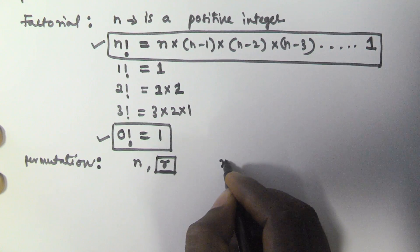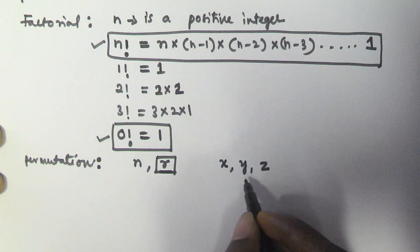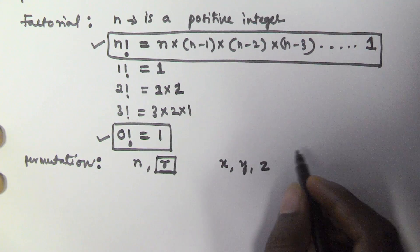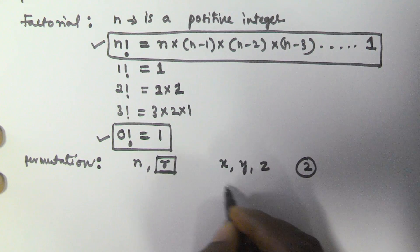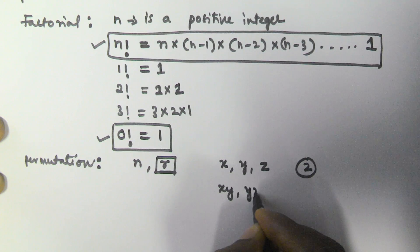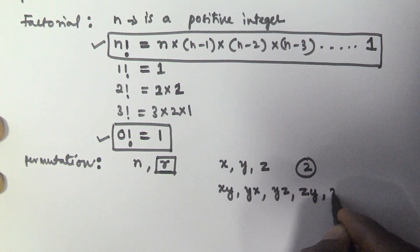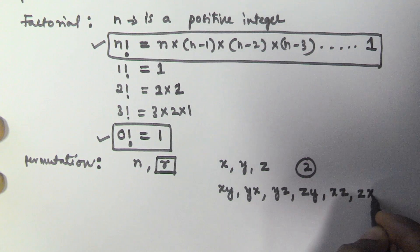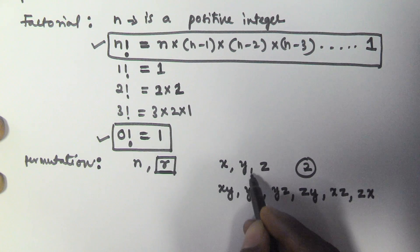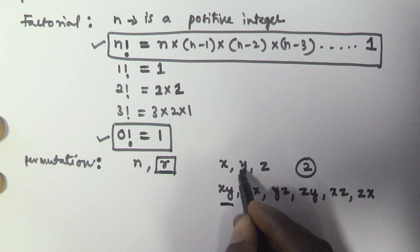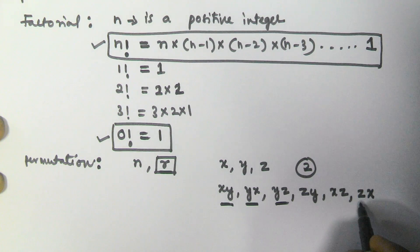Let us consider there are three variables: x, y, and z. Out of these three, we are taking two at a time and arranging them. So we can have: xy, yx, yz, zy, xz, and zx. These are all the arrangements of 3 things taken 2 at a time.